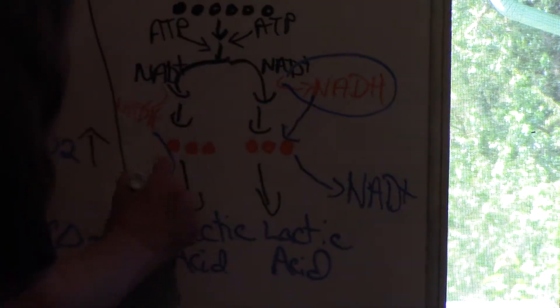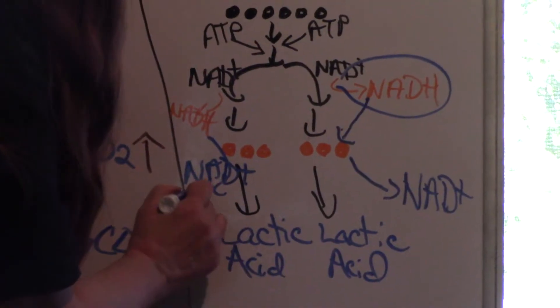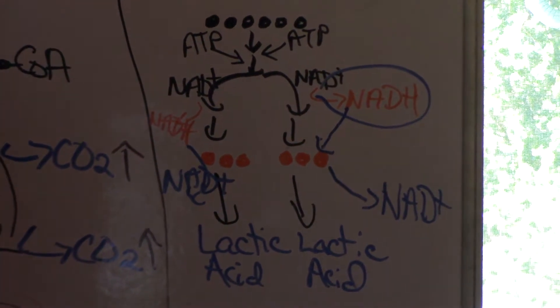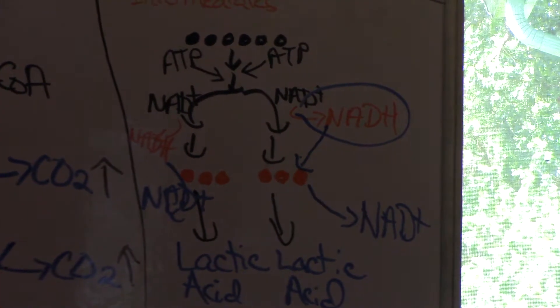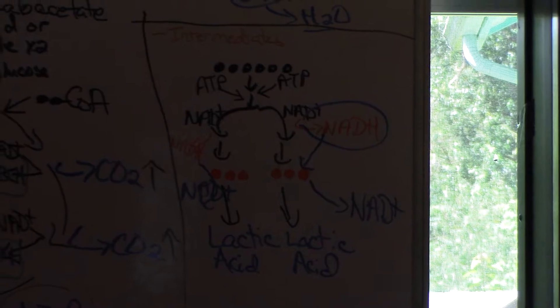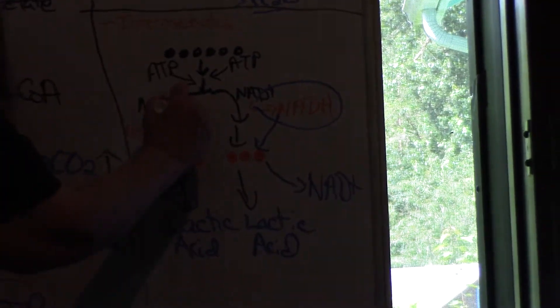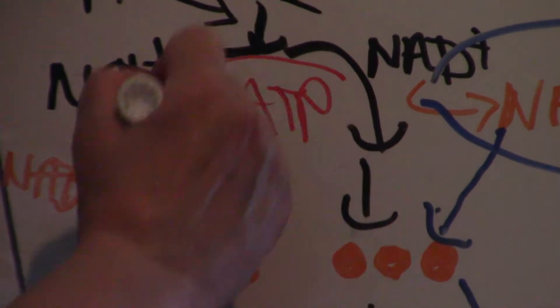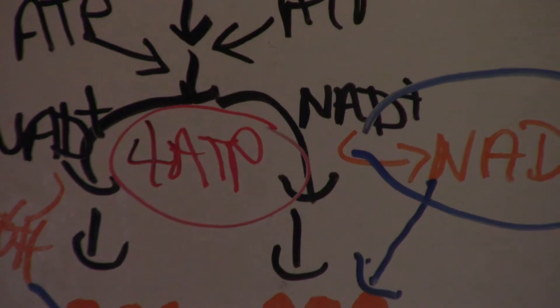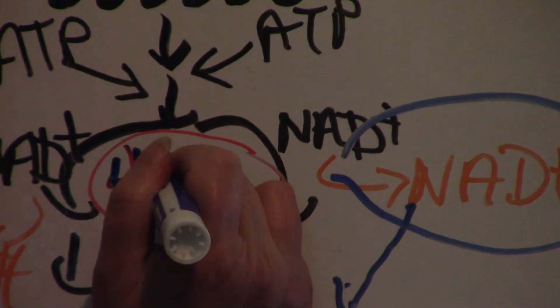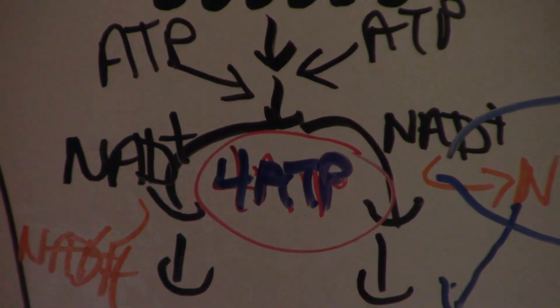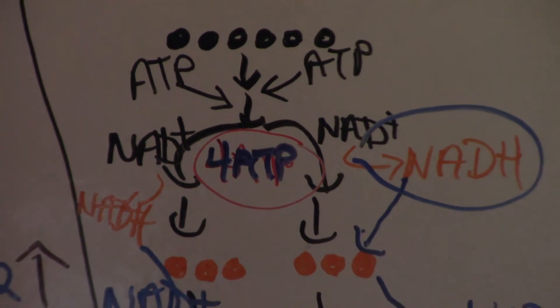What happens here? In order to reduce the pyruvate, the NAD comes in, or NADH, and gives up its passengers, so the taxis, instead of going to the ETS, give up their passengers here to make lactic acid. This is awfully small, so I'm going to have to do this. 4-ATP. Whoops, those should be in blue. 4-ATP by substrate level phosphorylation.